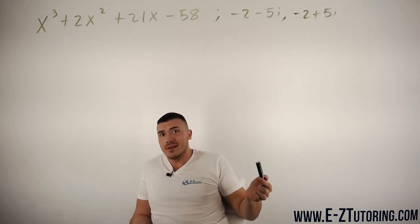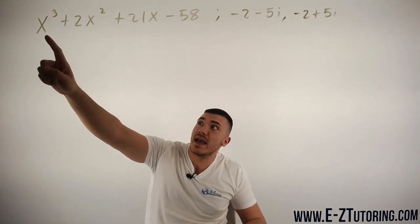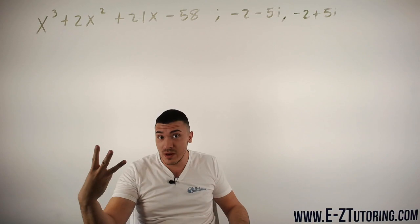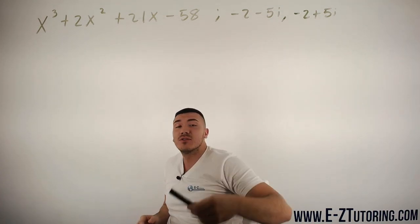So are we done? Well this is x cubed, which means we have three roots and so far we have two, we have one left.